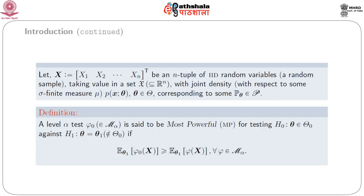Next, we consider X = (X_1, X_2, ..., X_n) to be an n-tuple of iid random variables — that is, a random sample from a certain distribution p(x|theta), where theta belongs to Theta and p(x|theta) is generated from the capital P_theta which belongs to script P.